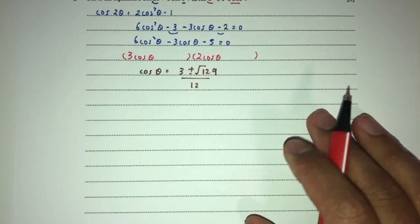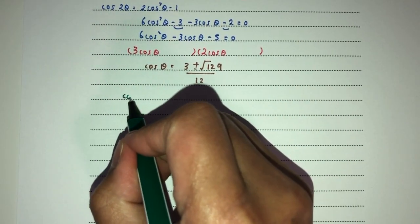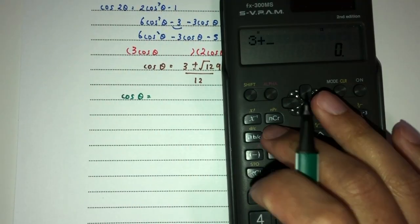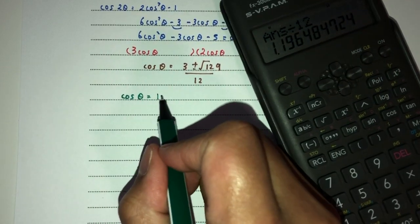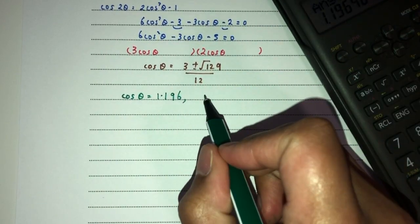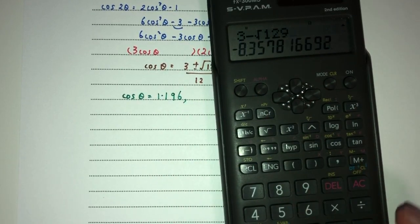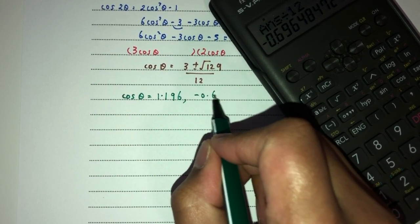So cos of theta is going to be minus b, which is the value of 3, plus minus root of 129, as we have just seen. That will be divided by 2a, which is 12. Let's double check. b squared minus 4 times a times c. Yeah, cool.